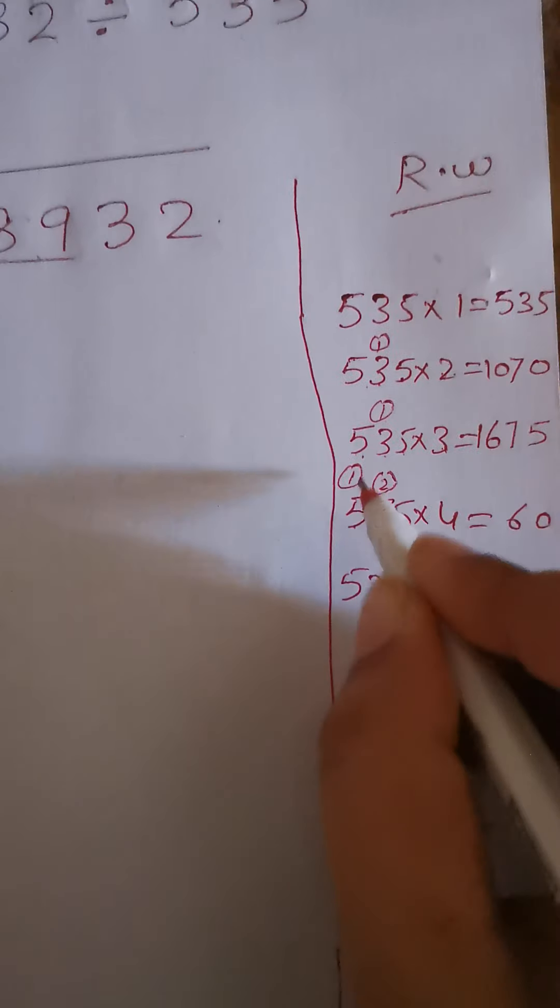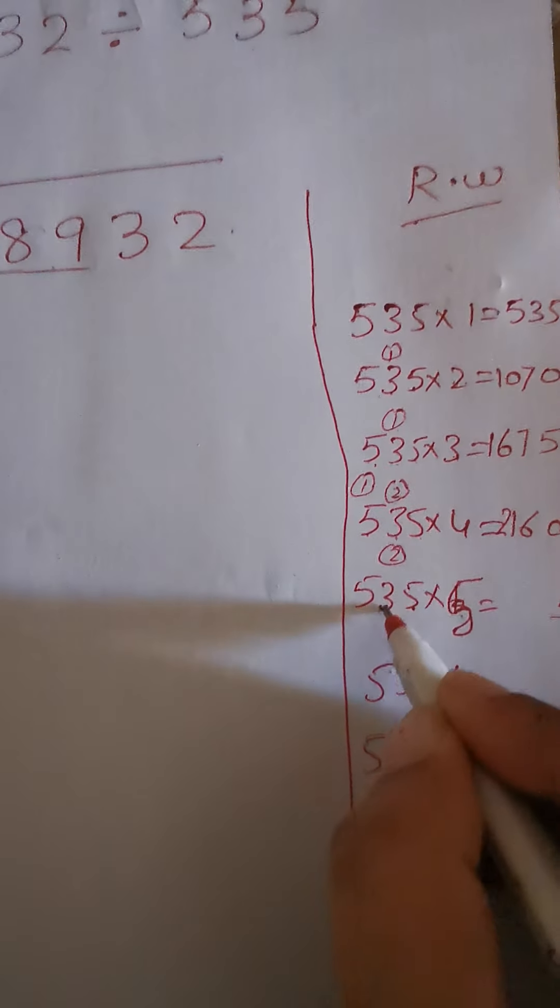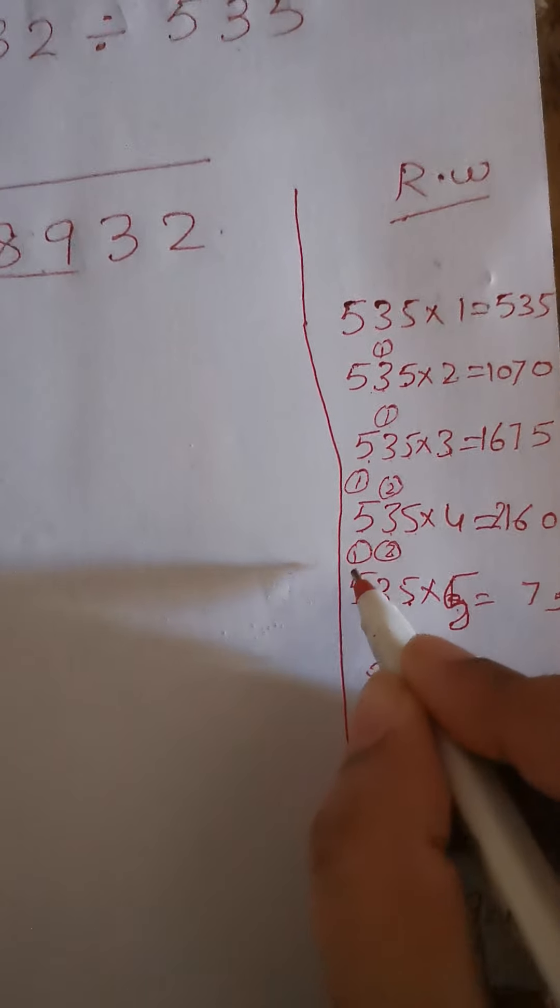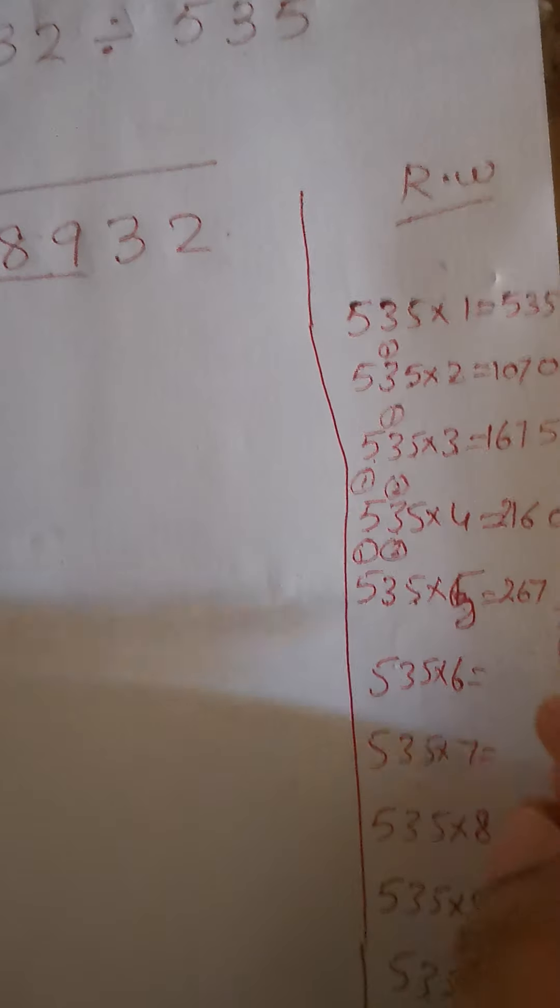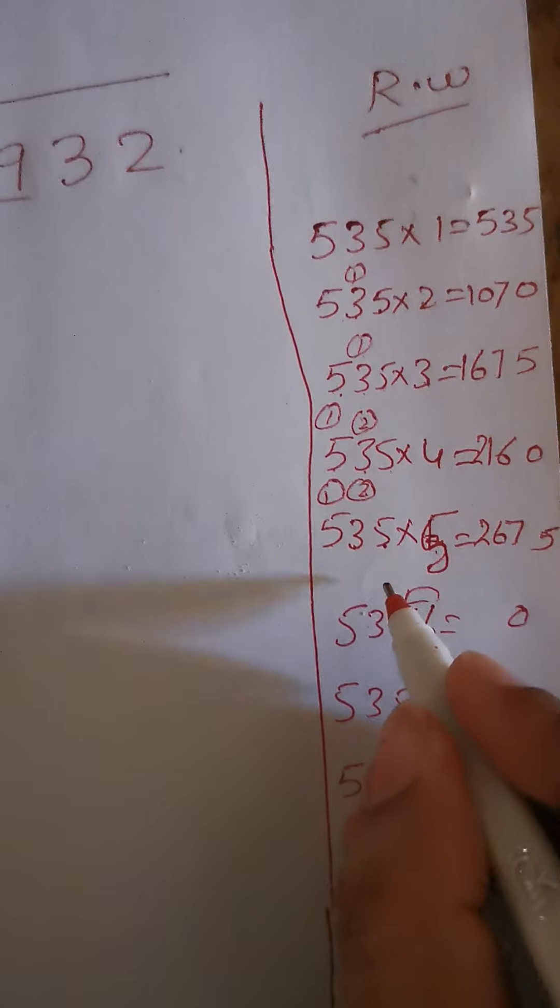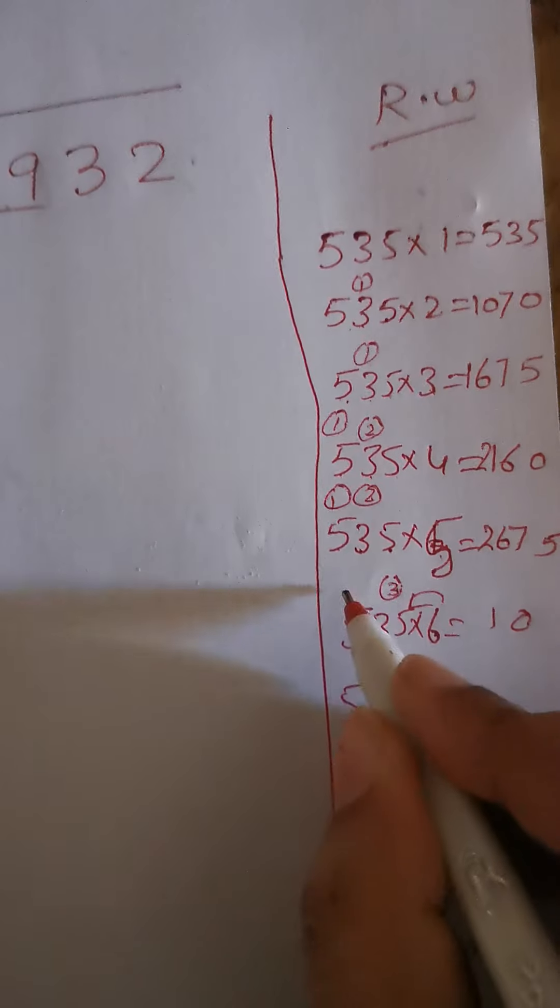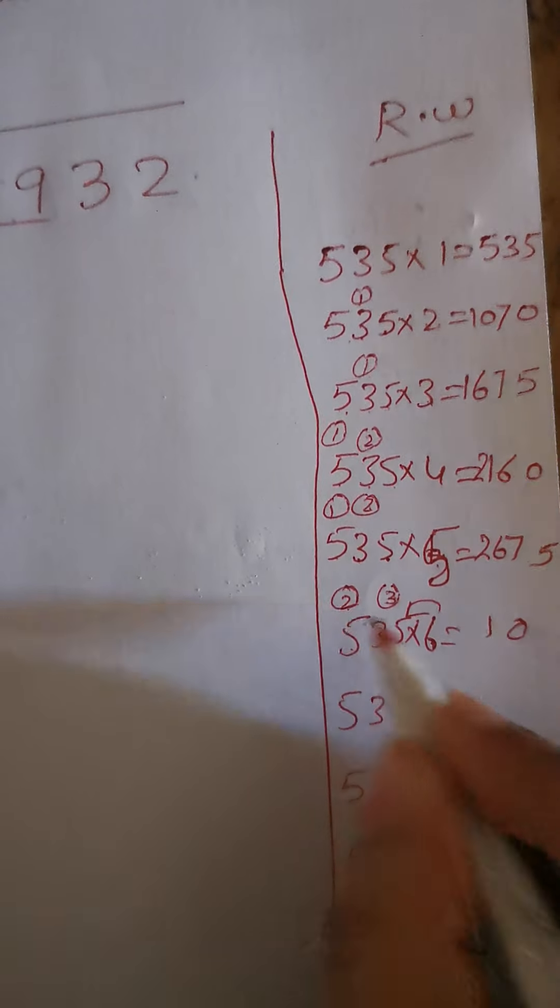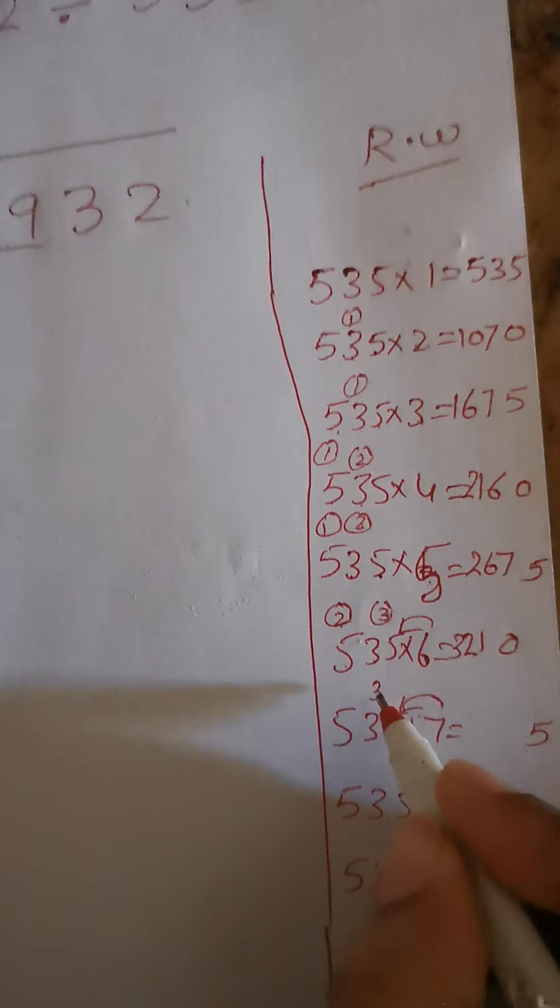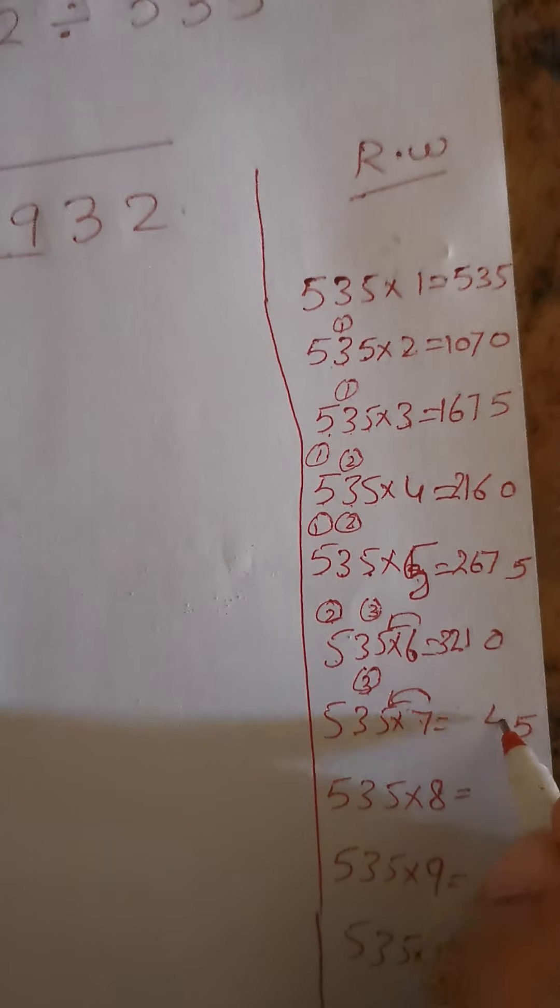For 535 times 5: 5×5 is 25, 5 with 2 carry, 5×3 is 15 plus 2 is 17, 5×5 is 25 plus 1 is 26. That's 2675. For 535 times 6: 6×5 is 30, 0 with 3 carry, 6×3 is 18 plus 3 is 21, 6×5 is 30 plus 2 is 32. That's 3210. For 535 times 7: 7×5 is 35, 5 with 3 carry, 7×3 is 21 plus 3 is 24, 7×5 is 35 plus 2 is 37. That's 3745.